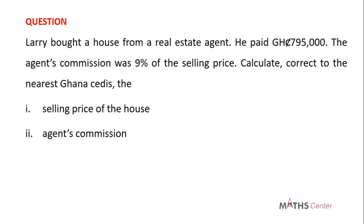Larry bought a house from a real estate agent. He paid 795,000 Ghana cedis. The agent's commission was 9% of the selling price. Calculate, correct to the nearest Ghana cedi: (i) the selling price of the house, and (ii) the agent's commission.